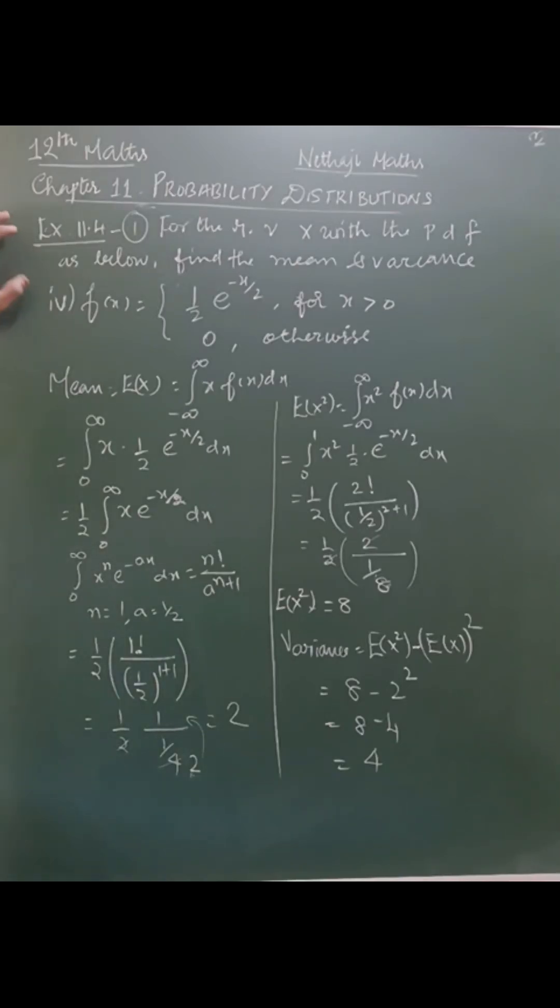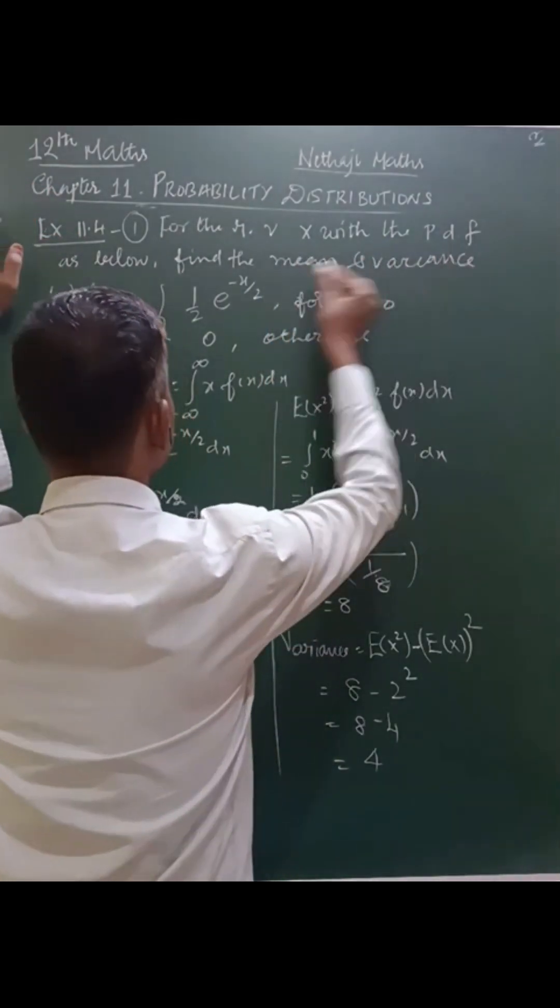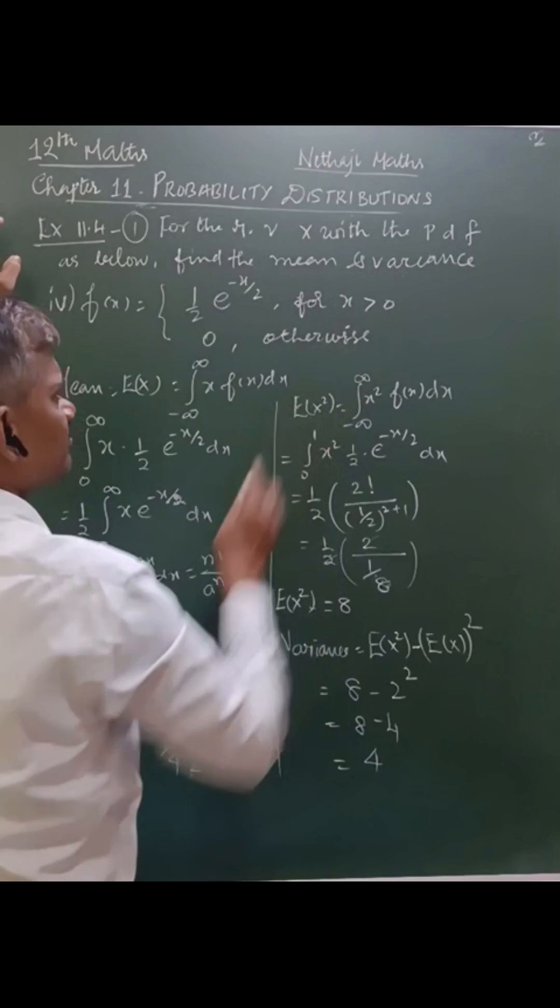Dear girls and students, in this video we are going to learn the first and fourth subdivision from Exercise 11.4 for the random variable x with the PDF, that is the probability density function. Find the mean and the variance.